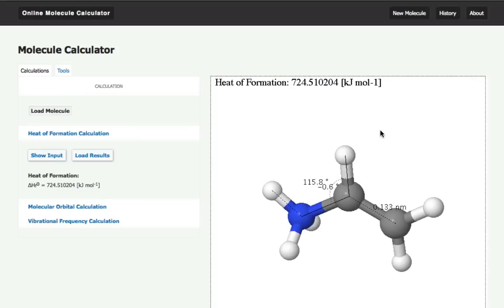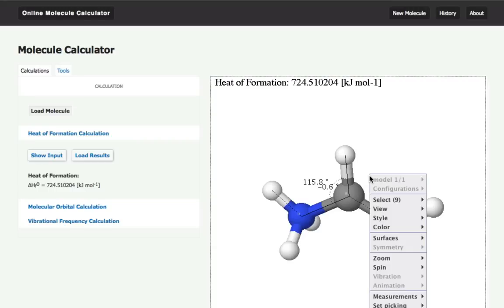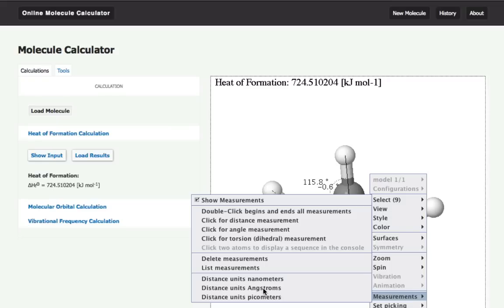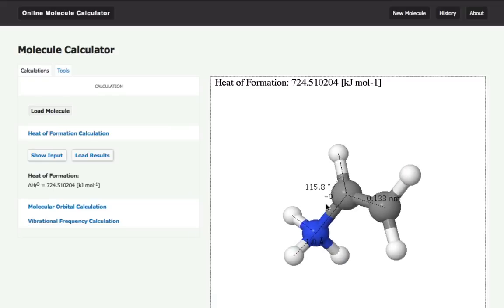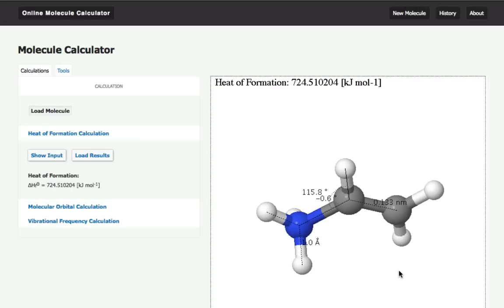By right-clicking, I get access to all the different things that JMol can do. For example, I can go into measurements and pick angstroms instead if I prefer that. Here the bond length is one angstrom. That's a quick overview of Molecule Calculator.